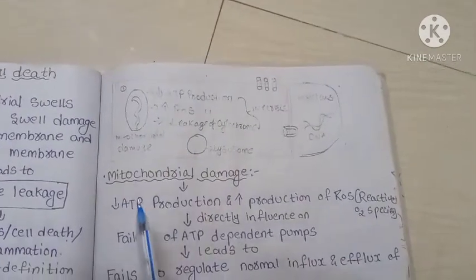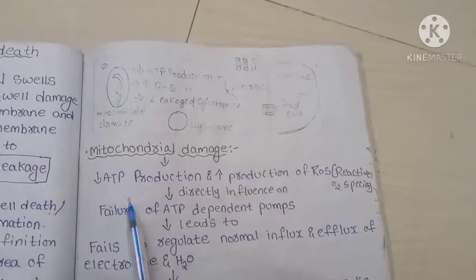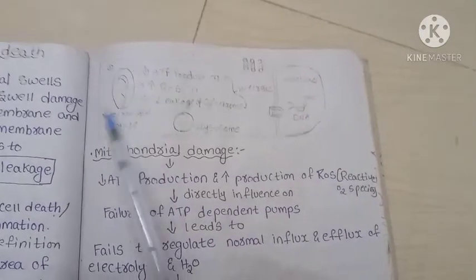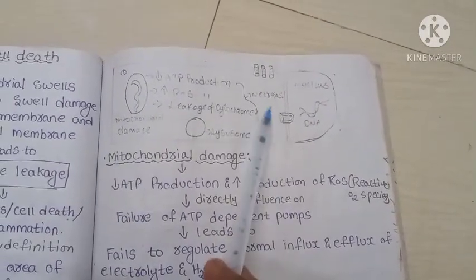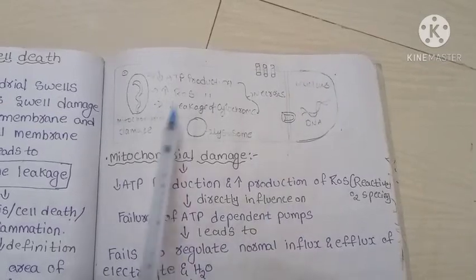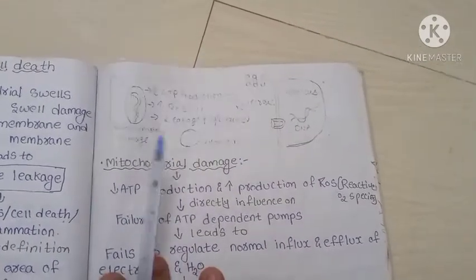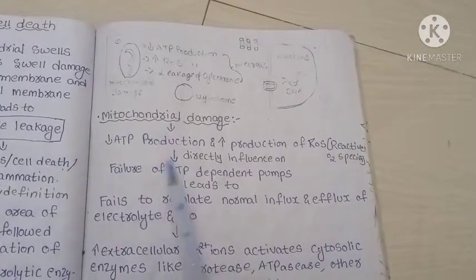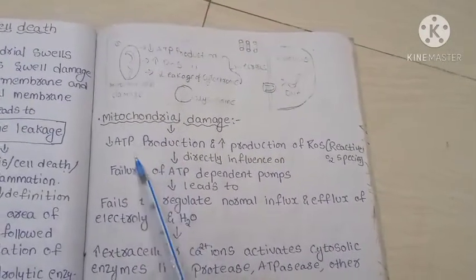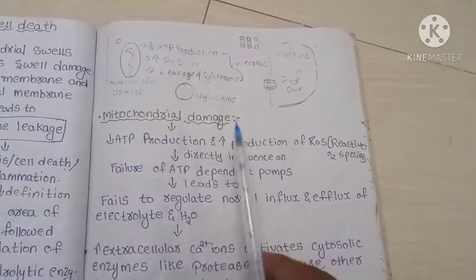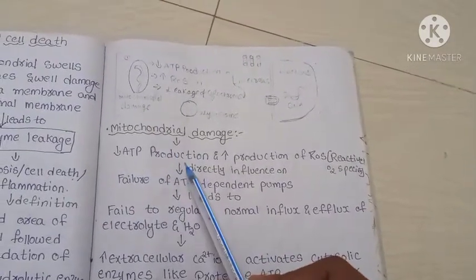Here we can see how mitochondrial damage occurs. The cell contains a cell membrane, nucleus, DNA, mitochondria, and lysosomes. When mitochondrial damage occurs, the first event is a decrease in ATP production.